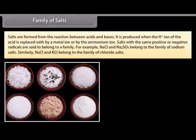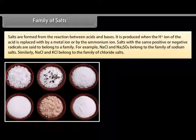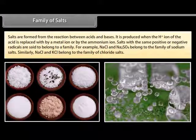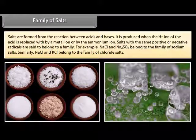Salts are formed from the reaction between acids and bases. A salt is produced when the H+ ion of the acid is replaced by a metal ion, an aluminum ion, or an ammonium ion. Salts with the same positive or negative radicals are said to belong to a family. For example, NaCl and Na2SO4 belong to the family of sodium salts, while NaCl and KCl belong to the family of chloride salts.